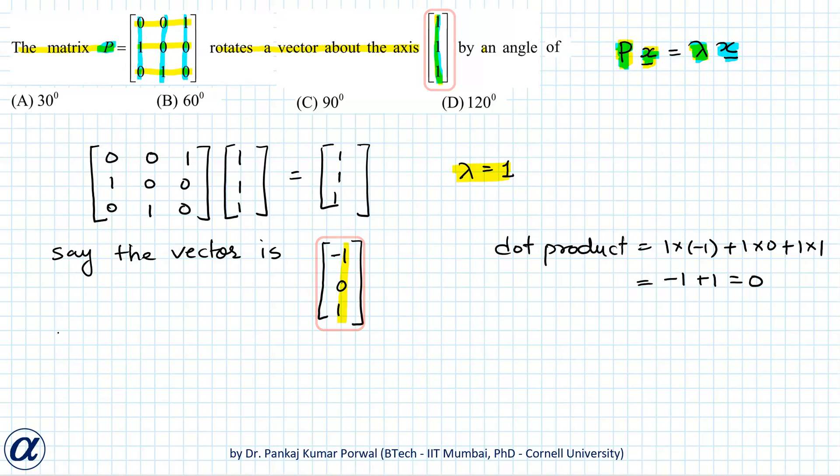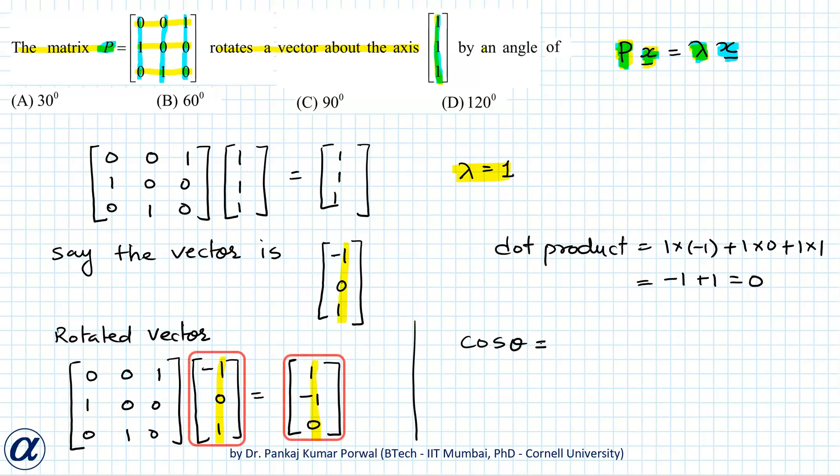Now let's find the rotated vector: that will be [0, 0, 1; 1, 0, 0; 0, 1, 0] times [-1, 0, 1], which gives me [1, -1, 0]. So this is my original vector and this is the rotated vector, and if angle between these two vectors is theta, then cos theta will be dot product of these two divided by magnitude of these two.